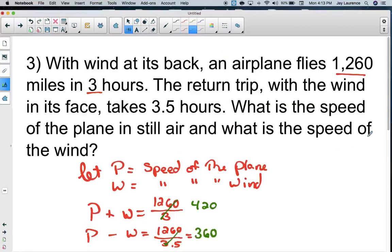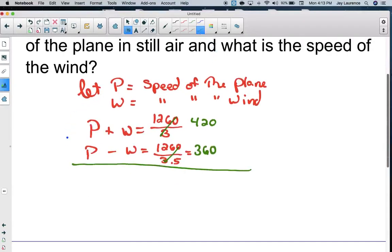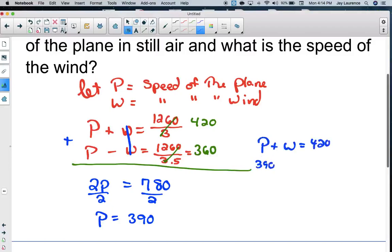Now this is a great problem to do elimination on. I'm going to add the two equations together. P plus P is 2P, the W's cancel, 420 plus 360 is 780. Now I'm going to divide by 2. I think this should be 390. And then if I go P + W equals 420, that would be 390 + W equals 420, I think W is going to equal 30.